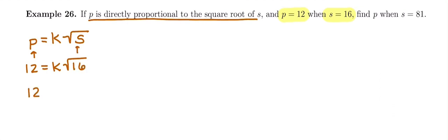What is the square root of 16? The square root of 16 is 4. Let's divide both sides by that 4 then. And K, the constant of proportionality, is going to be 12 divided by 4, which is 3.